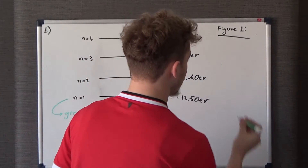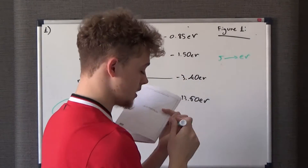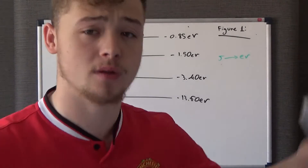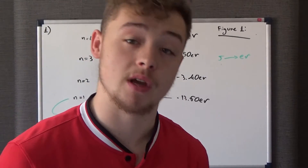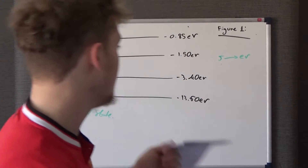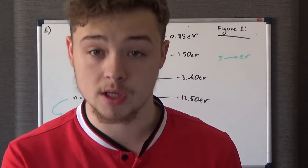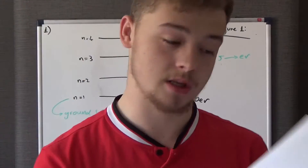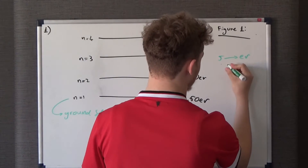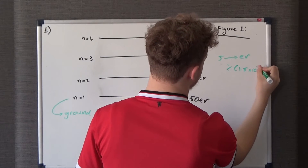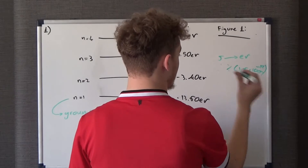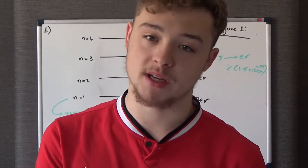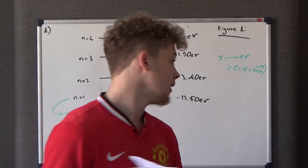Just a quick recap before we get into the question: joules to eV. The idea of eV is to make really small numbers of joules bigger. eV will always be bigger than joules. Going from joules to eV, we divide by the charge of an electron — 1.6×10⁻¹⁹. Going from eV to joules, we multiply by 1.6×10⁻¹⁹, since the joule value is less than the eV value.